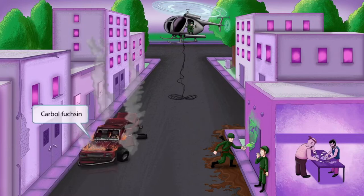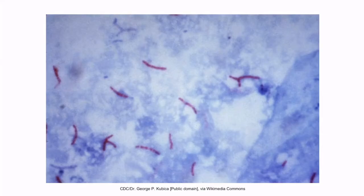Notice that we've added a car to the scene which is in flames because of a bomb that went off inside the car. Car bomb sounds like carbofusion, so in this image it will represent carbofusion. Carbofusion is a red staining reagent that's used as one of the steps in the acid-fast stain — so car bomb for carbofusion.